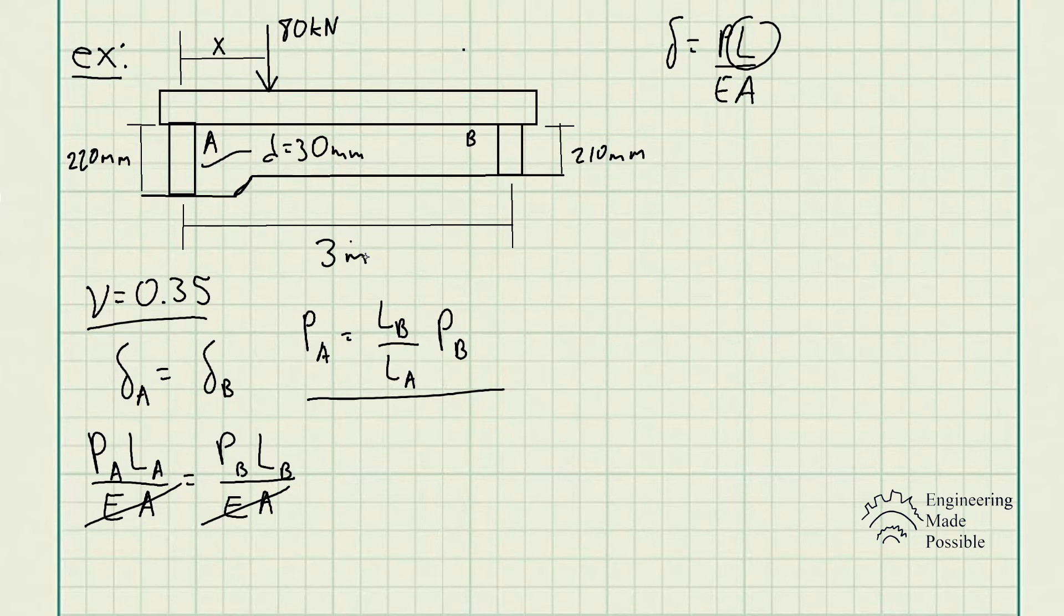Now we could go ahead and do the static equilibrium, do the summation of forces with respect to the y-axis. Let's go ahead and do that. So we have these reaction forces. We could say P_A plus P_B because they're both in the positive direction going upwards. And 80 kN is downwards, negative, is equal to zero.